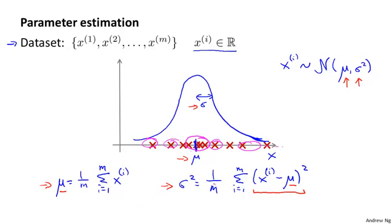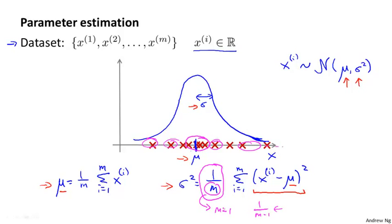One last side comment for those who've taken a statistics class: some may have seen the formula use 1 over (m minus 1) instead of 1 over m. In machine learning, people tend to use the 1/m formula. In practice, whether it's 1/m or 1/(m-1) makes essentially no difference, assuming m is reasonably large. Both versions work about equally well, though they have slightly different theoretical properties.